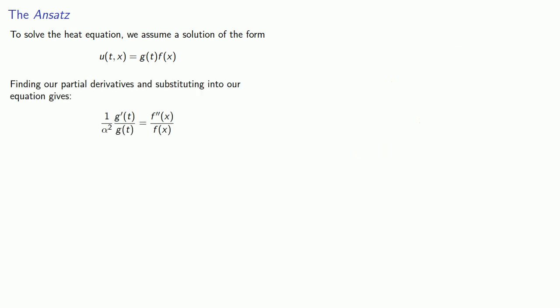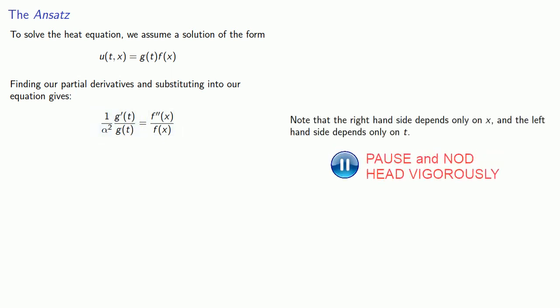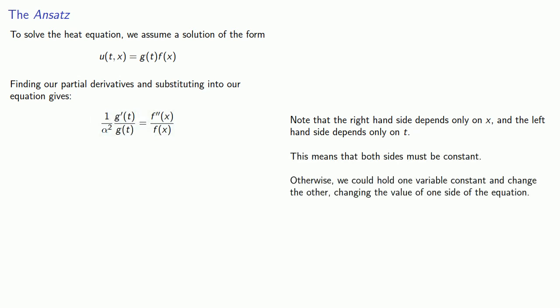Now here's the important thing to notice. The right-hand side depends only on X, and the left-hand side depends only on T. So why is this significant? In order for these to be equal for all values of T and X, this means that both sides must be constant. Otherwise, we could hold one variable constant and change the other, changing the value of one side of the equation.